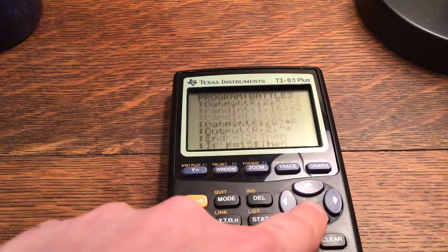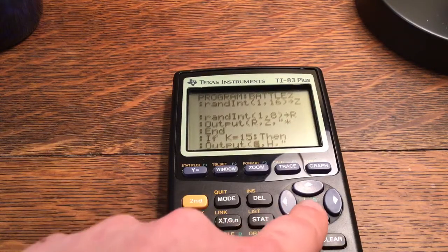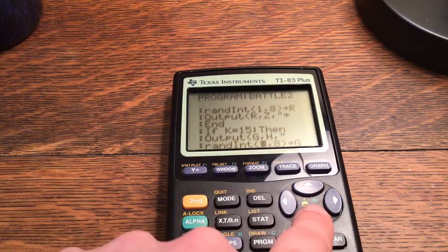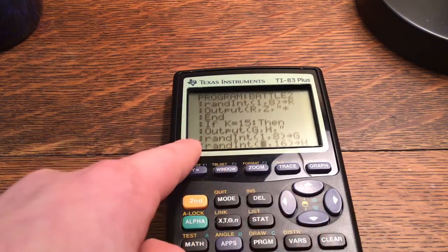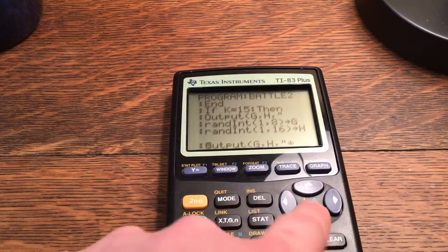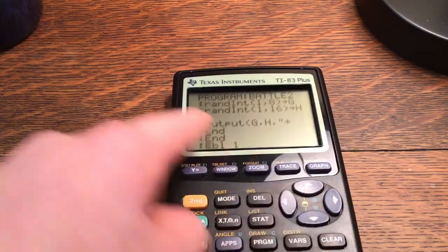If K is equal to 15, then output G, comma, H, quote. And, again, there's a space right there. So, it deletes the old spot of the mine. Then you have the random integer storing into it. And then output the actual mine. And then two ends.